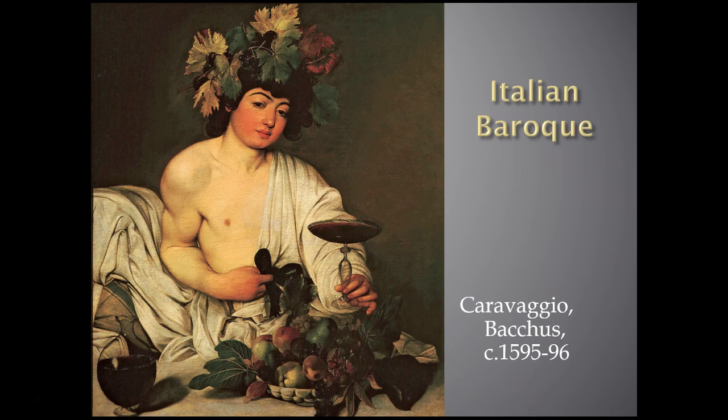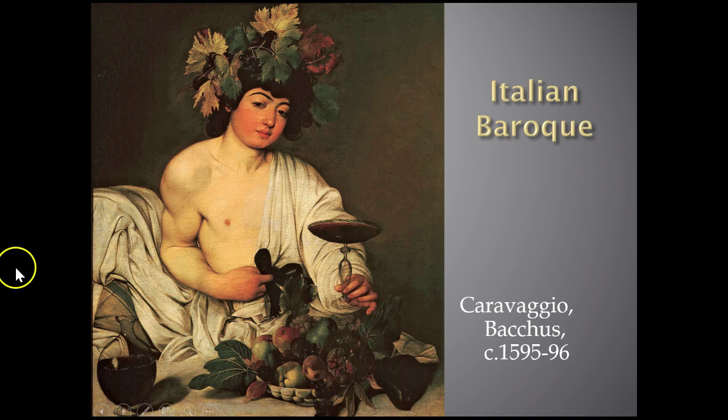Here's another image done by Caravaggio — a depiction of Bacchus, the god of wine. It's innovative because while it's a mythological subject, it's not an idealized god, because he used a regular person as the model. He would actually use people from the streets and didn't idealize them. When you look closely you can see the tan lines — his face and hands are tan, and where his shirt would be it's white.